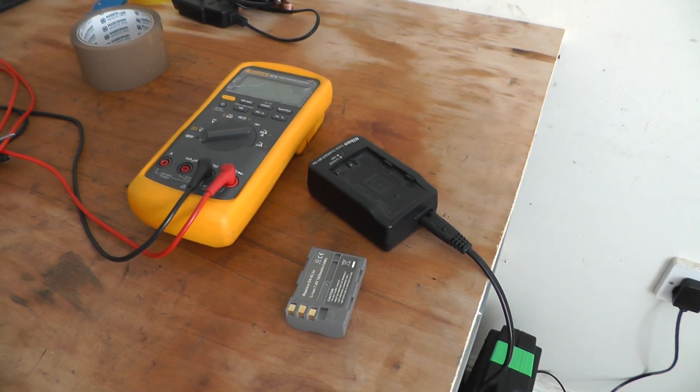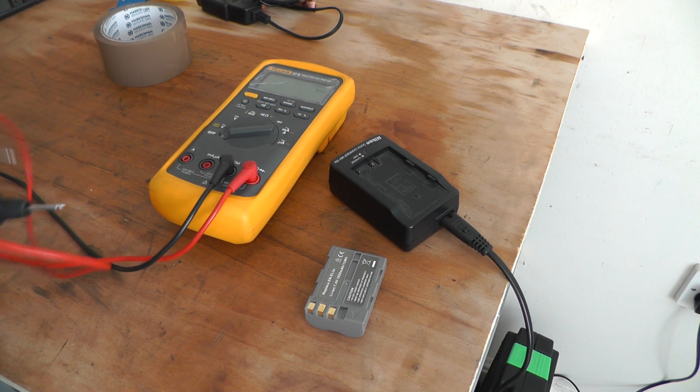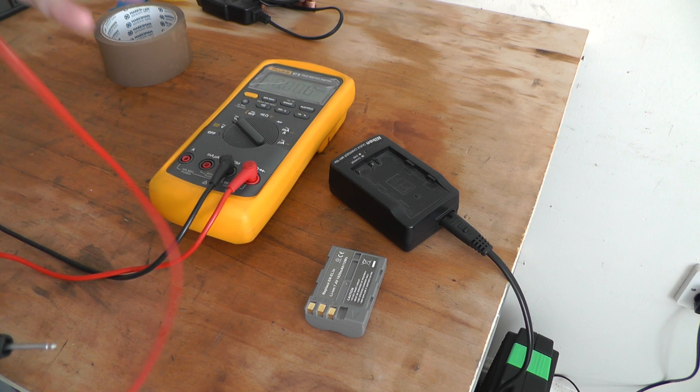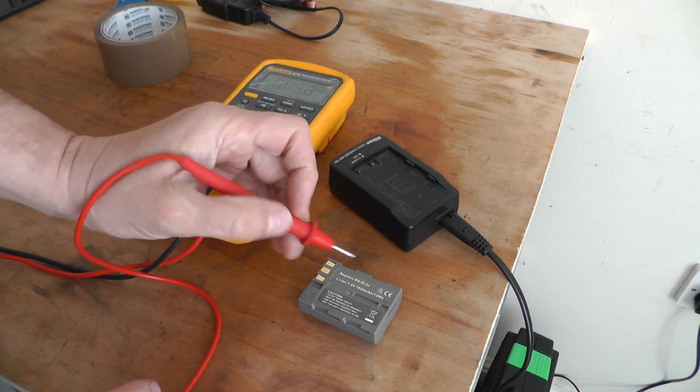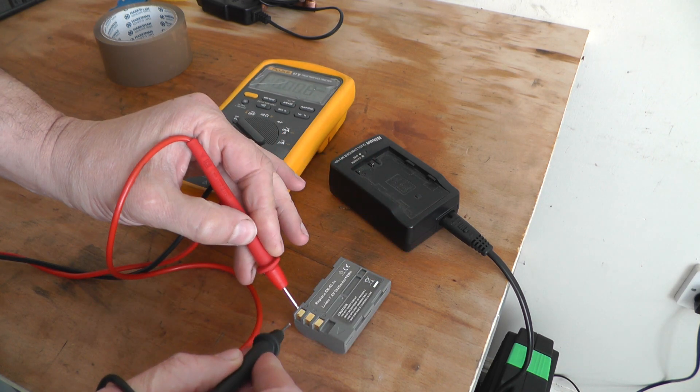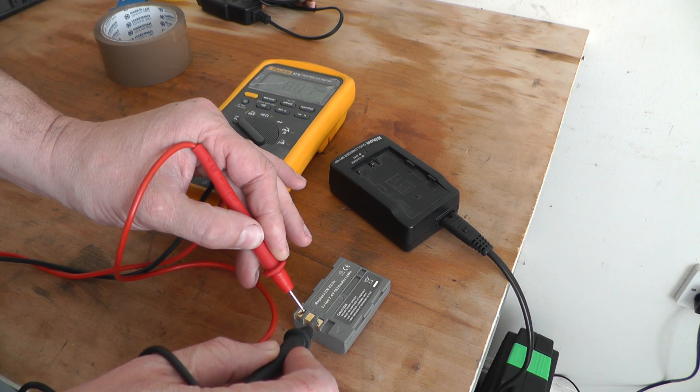To test these Nikon D90 batteries, just set your meter to DC volts and have a look. 7.4 volts. There's a plus and a minus, and that's 8 volts, so that's telling me that it's good.